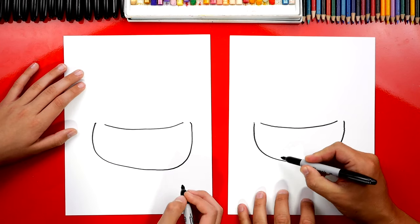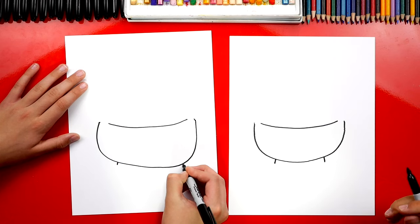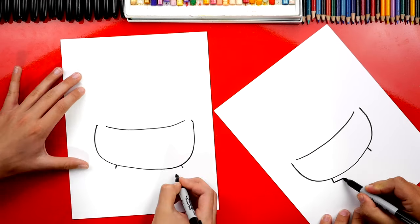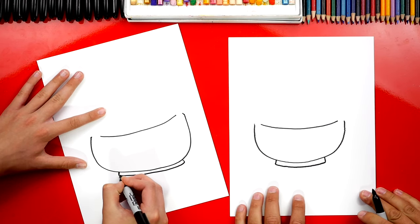Then down here at the bottom we can draw the little stand for the bowl so it doesn't roll off the table. So two lines and then let's connect those two lines with another curve all the way across.